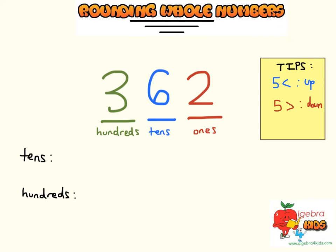Let's try this out. If we're rounding to the tens place, we're going to look at the 2. So is the 2 greater than 5 or less than 5? Well, it's less than 5, which means we're going to round down. So that means the 6 is going to stay as a 6 — that's what rounding down means. So 362 rounded to the tens place is 360.